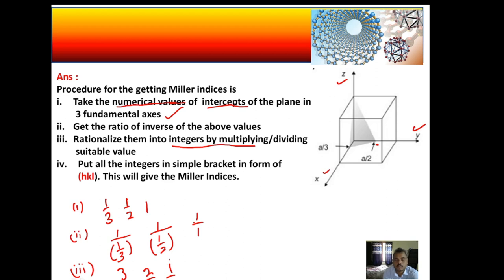So we straight away go to the fourth step: put all the integers in simple bracket form. So we got 3 and 2 and 1, all of them we put in bracket (3 2 1) and this is the answer.